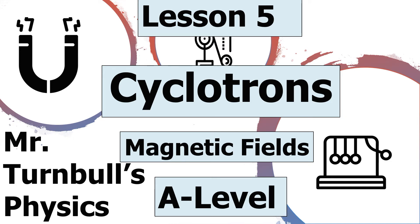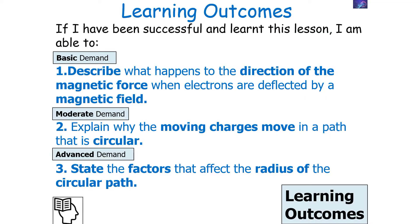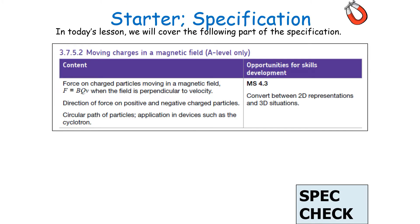Hello and welcome to today's lesson on cyclotrons, which is part of the magnetic fields topic in AQA A-level physics. In today's lesson, we're going to look at describing the movement of charged particles in particle accelerators. We should be able to describe the direction of the magnetic force when electrons are deflected by the magnetic field, explain why moving charges move in a circular path, and state the factors that affect the radius of a circular path — covering the AQA specification topic of moving charges in a magnetic field.